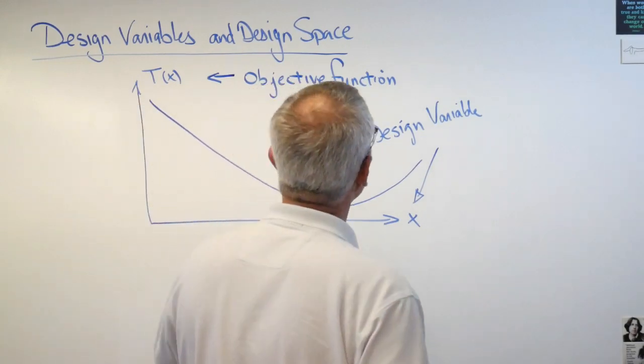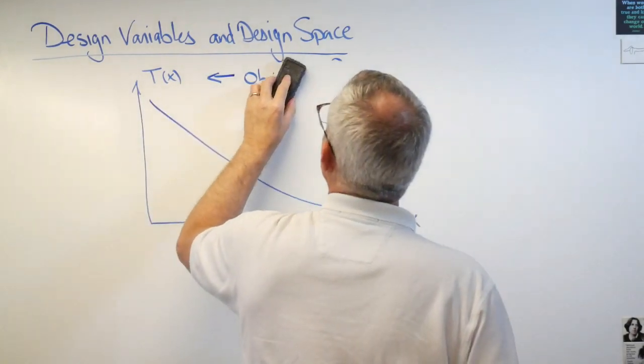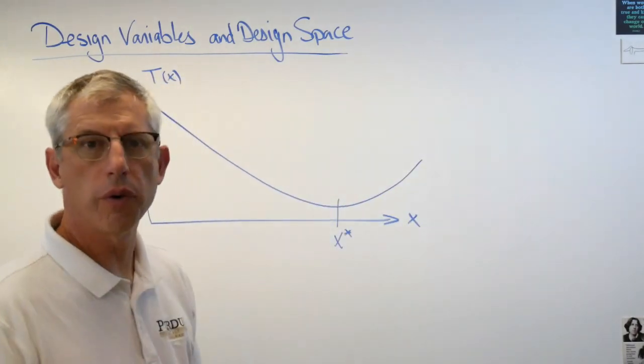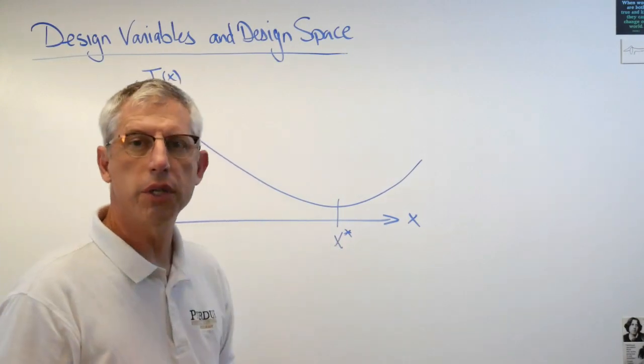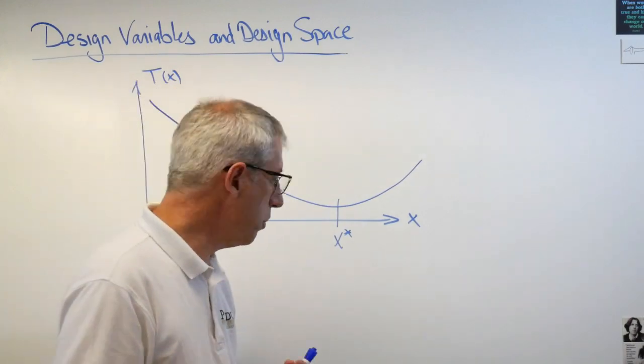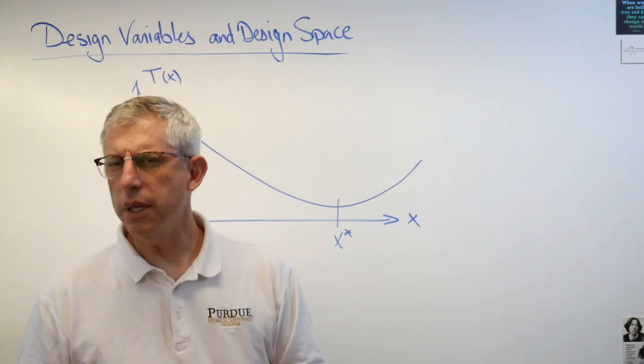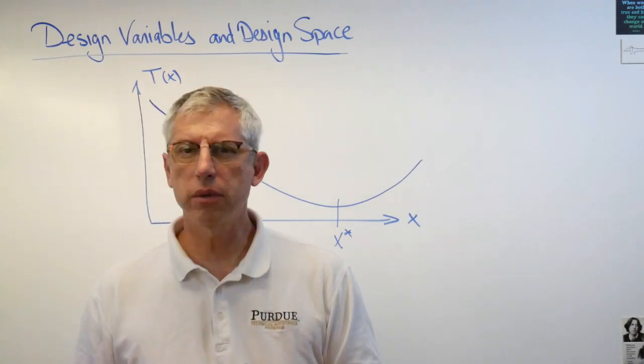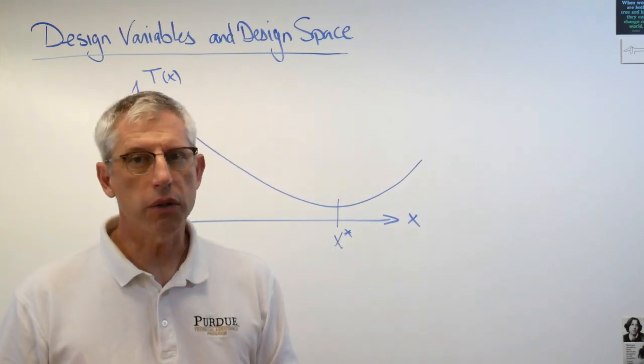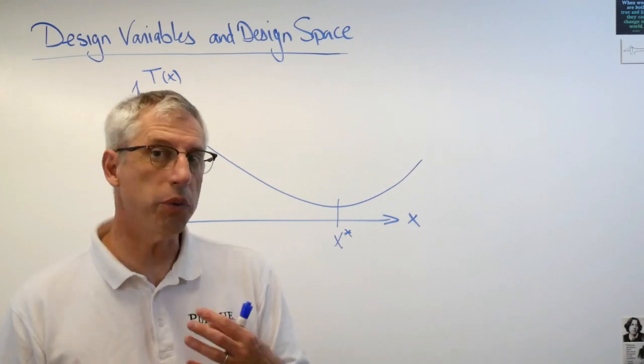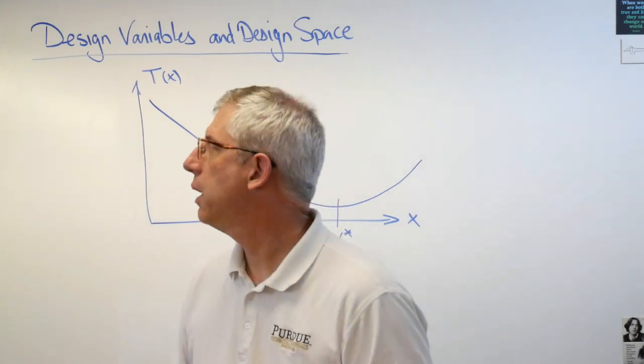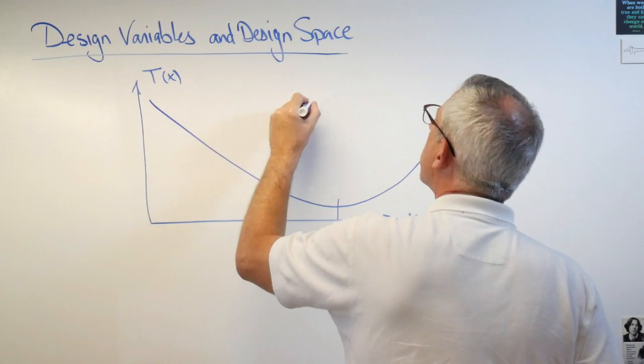Now what is this plot called? Mathematicians will refer to the mathematical region defined by the independent and the dependent variables as a space. Now this is a pretty abstract term. Does it really describe like a 3D space I can walk through? No it doesn't. What it does describe is a mathematical space, a conceptual kind of space that you can walk through at least conceptually. If the space has three or fewer dimensions you can actually draw a picture of it. So this whole thing is called design space.